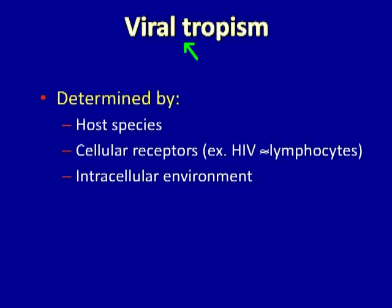The spread of a virus within an individual host is what we refer to as viral tropism. This means that the virus has a predilection to infect certain cells when it finds them. Tropism is determined by the species, since some viruses can infect some species quite efficiently but not others at all. It may be influenced by cellular receptors, such as in the case of HIV, in which only CD4 lymphocytes are infected efficiently. Or it could be affected by the intracellular environment, meaning the virus requires certain machinery and certain types of cells in order to replicate, and that machinery may not be found in other cell types.